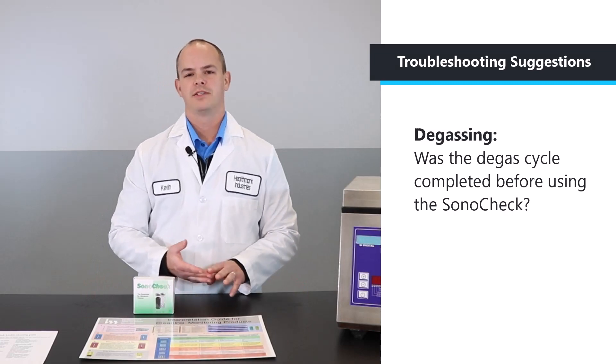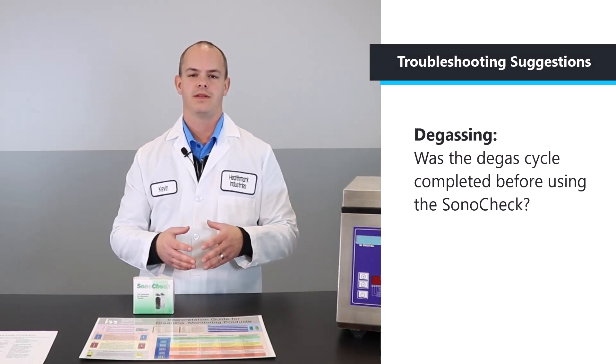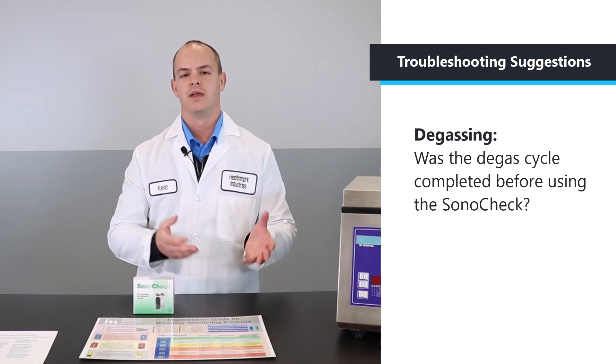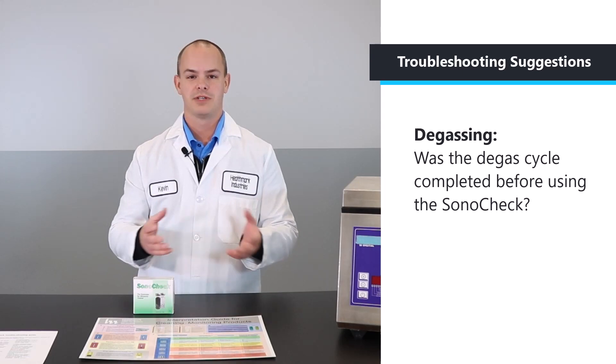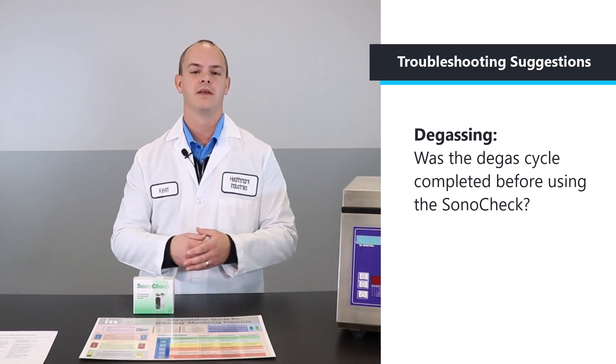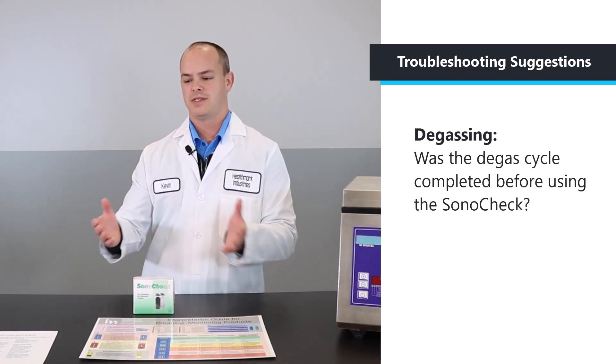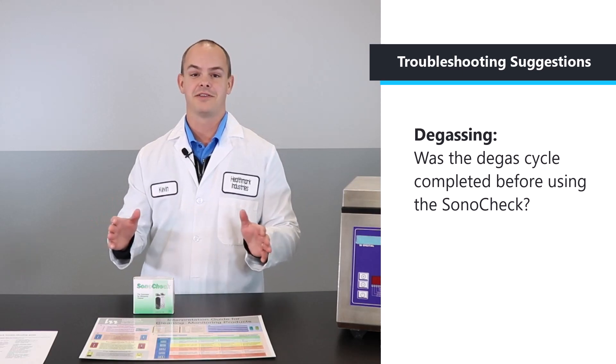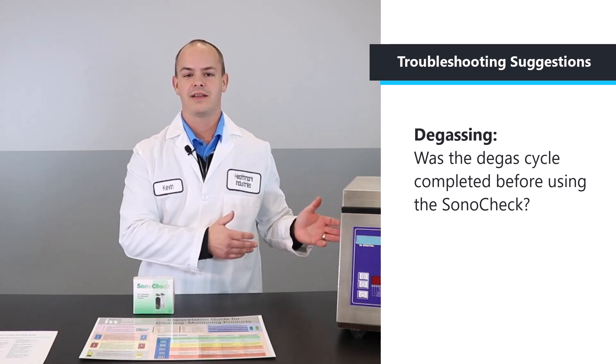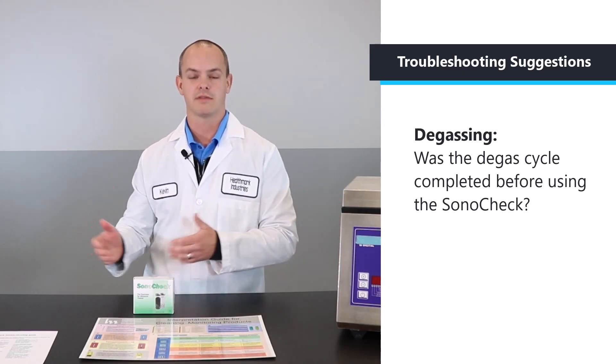All right. So one common troubleshooting thing that we see that you could do right in your department is simply the degassing cycle. If you do have one of those ultrasonic cleaners that still require a degas cycle to be run prior to running an instrument cycle, make sure that you do that first. One of the things that we see is many departments don't have standard equipment. So you might have one that's like that and one that does it automatically. So there's that room for error and forgetting to run the degas cycle.